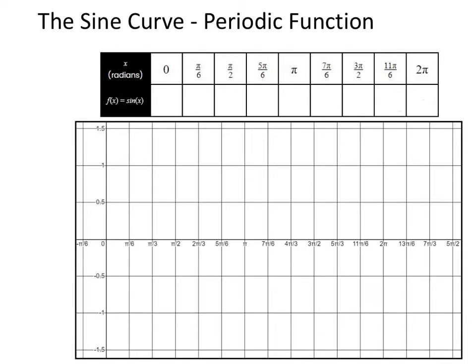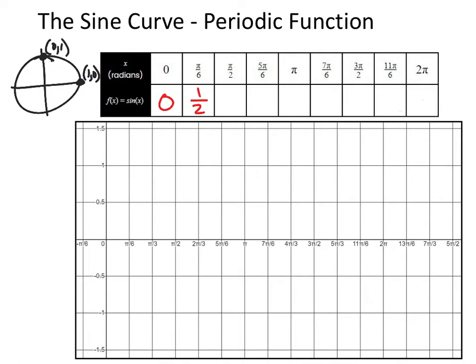Let's talk about the sine function. We know some values of sine of x from the unit circle. Sine is the second coordinate in the coordinate pair, so sine of 0 is 0. Sine of pi over 6 — that's 30 degrees, one of the angle values in the first quadrant — and we know that sine of 30 degrees is one half. Sine of pi over 2 is 90 degrees, and sine of 90 degrees is 1.